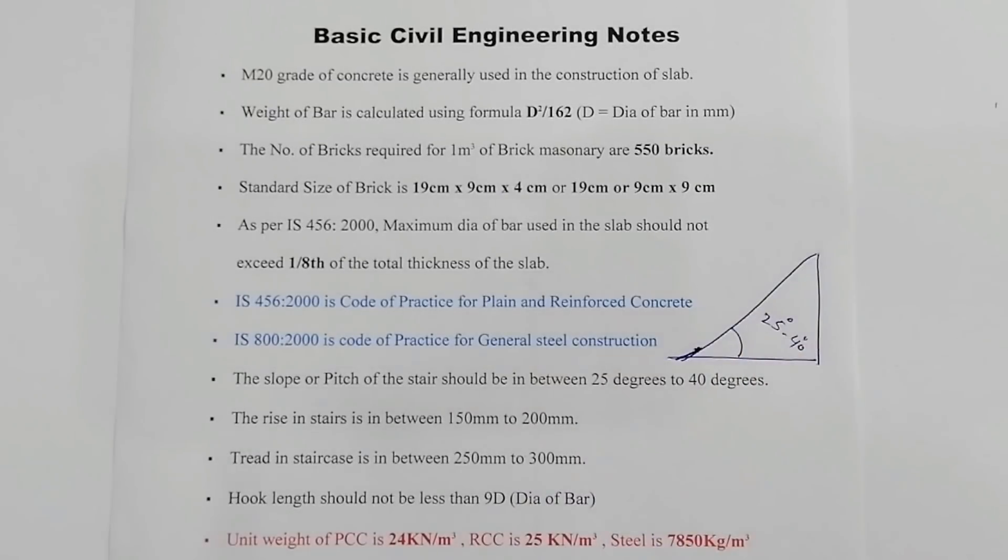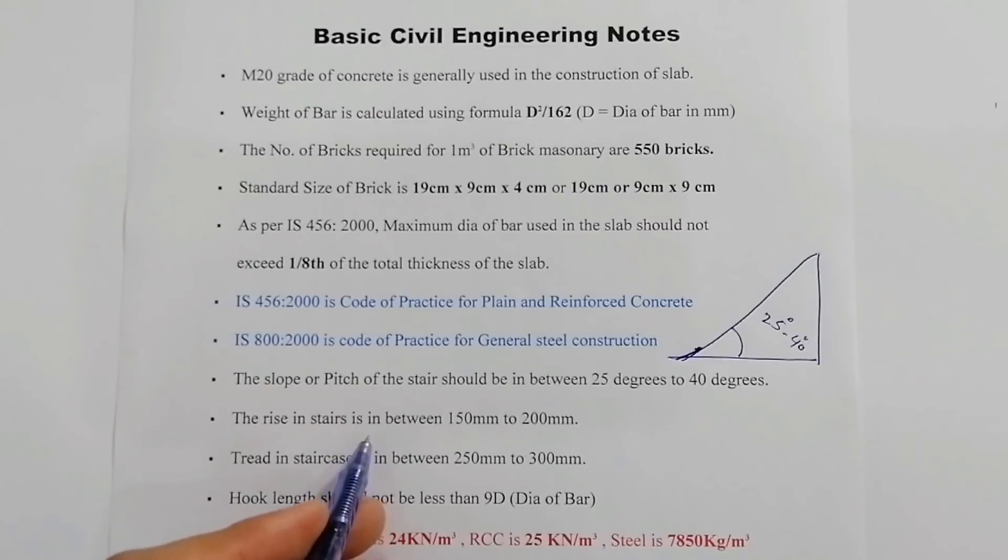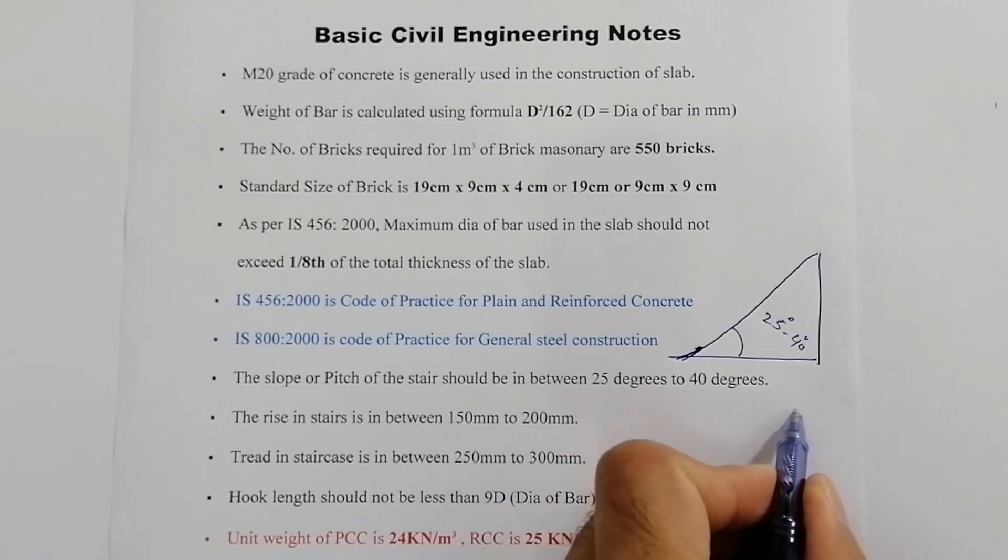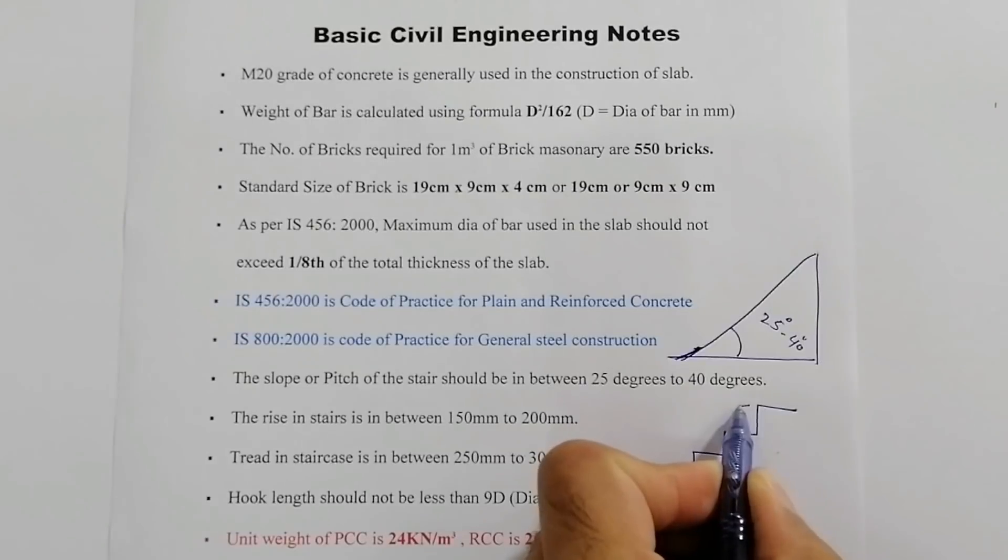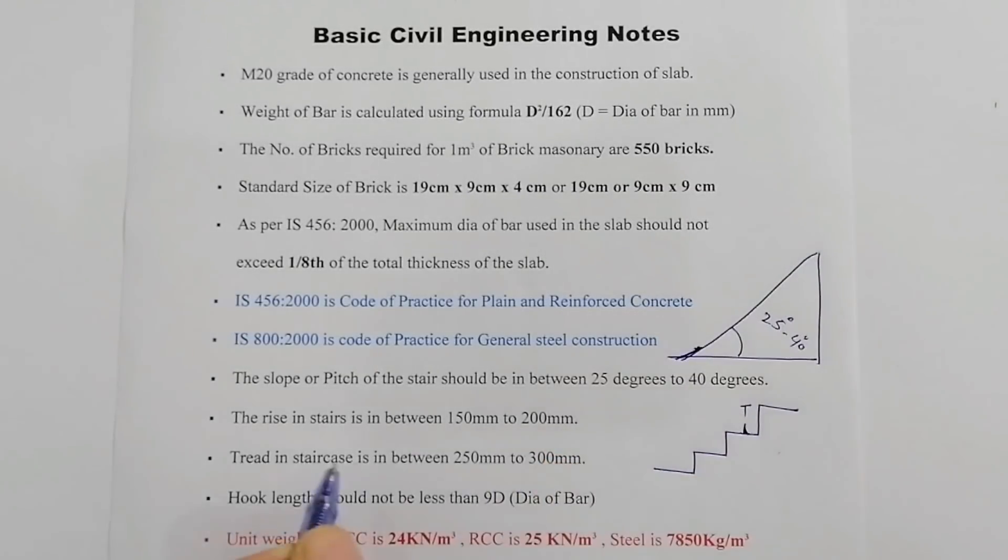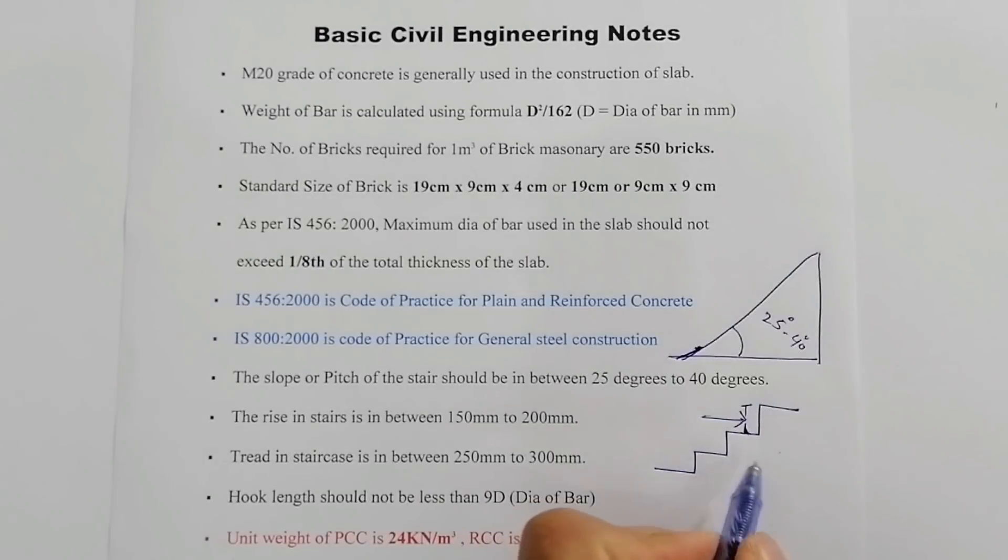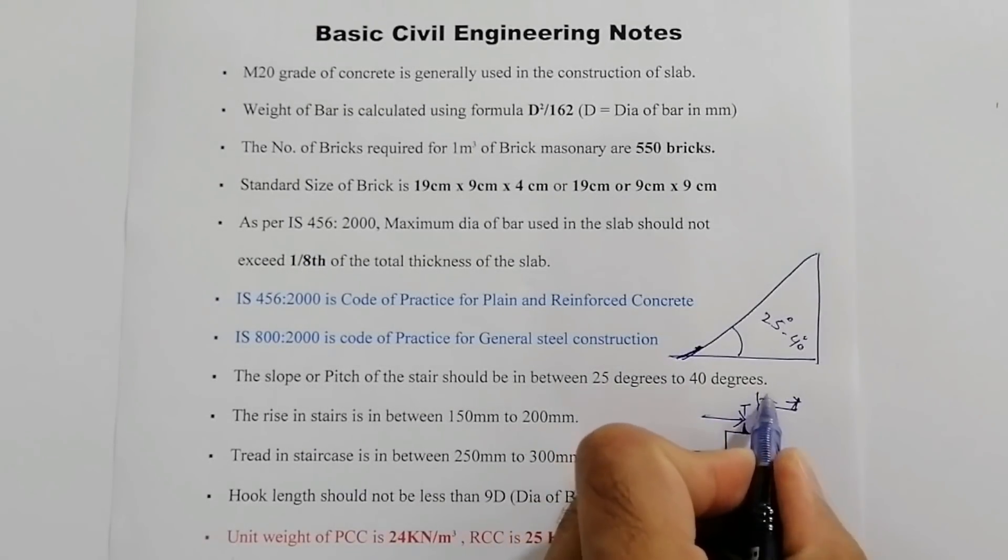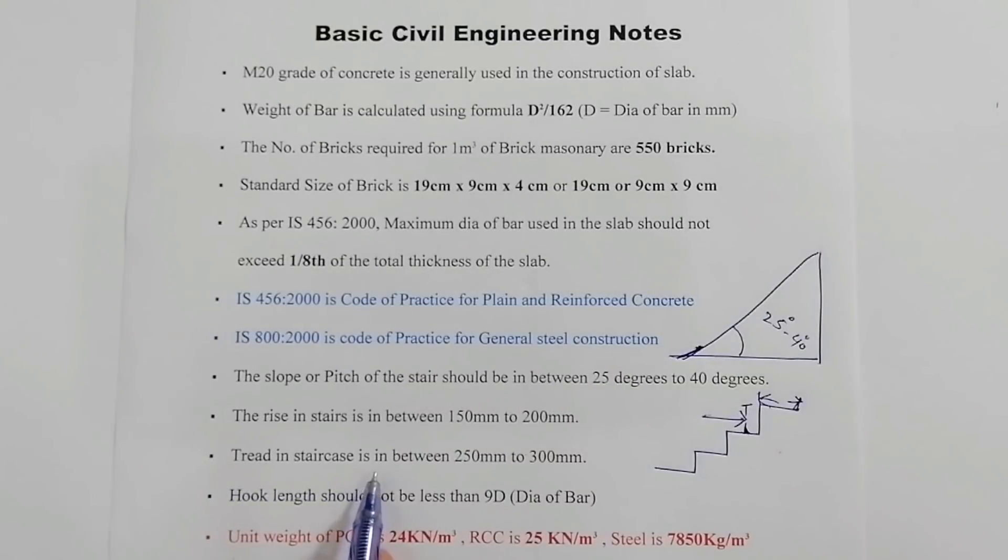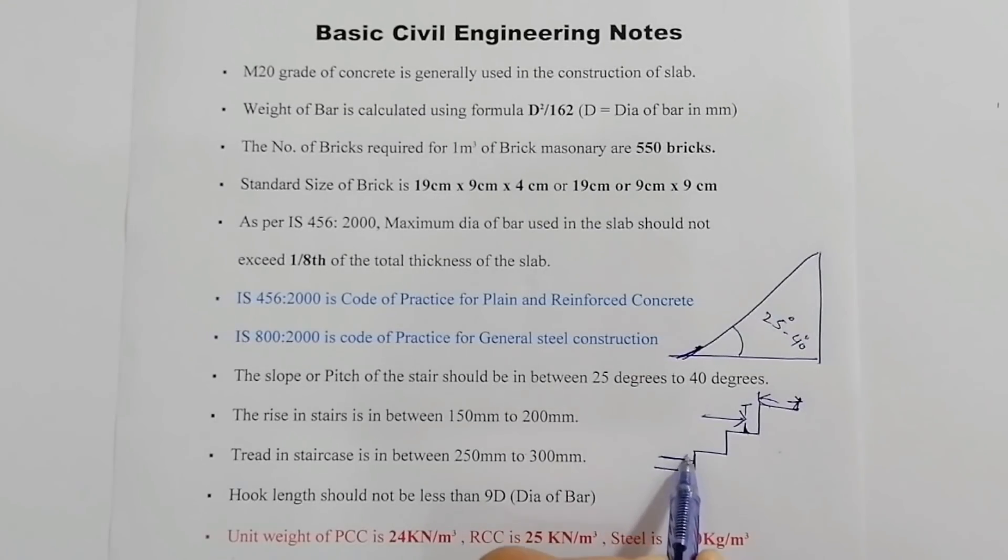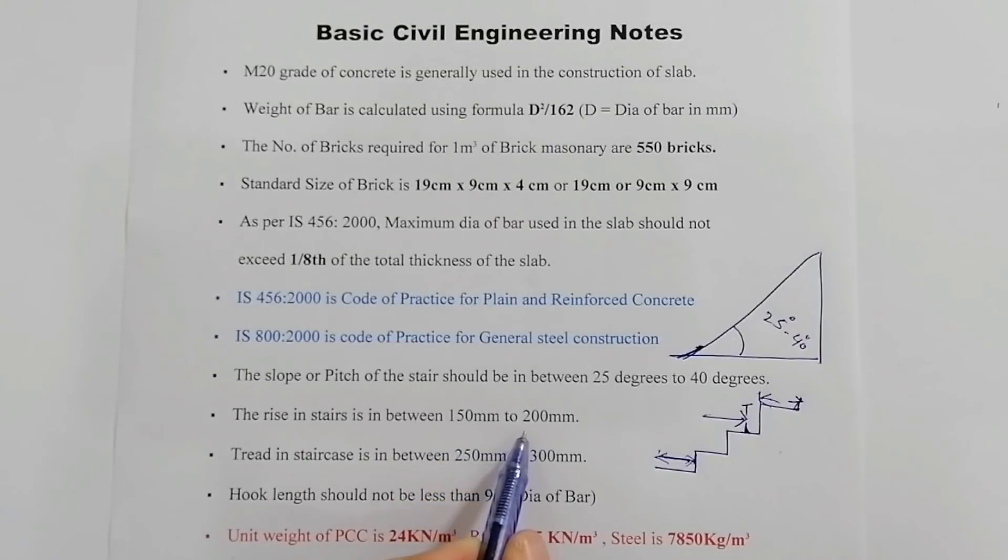The rise in stairs is in between 150 millimeter to 200 millimeters. You can see here this is a riser, so the riser size should be between 150 millimeter to 200 millimeter. Now we have the tread. The tread in staircase is between 250 millimeter to 300 millimeter. Between 250 and 300 millimeter you can take tread, and for riser 150 millimeter to 200 millimeter.